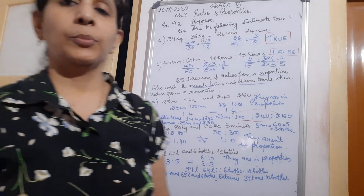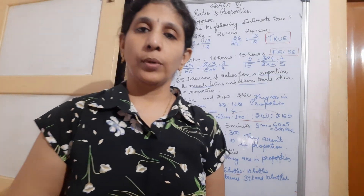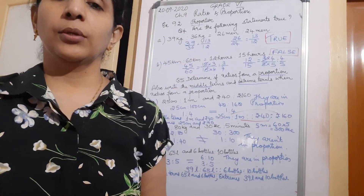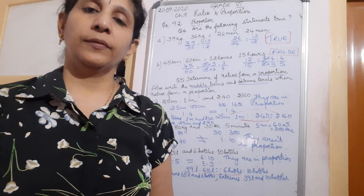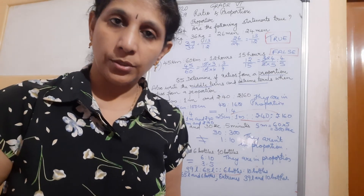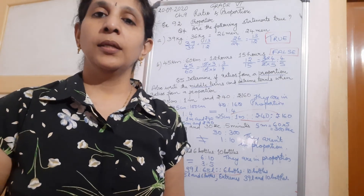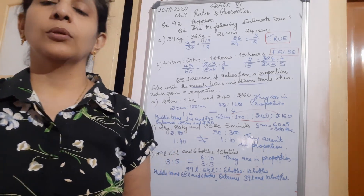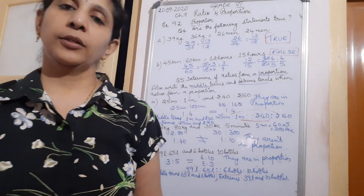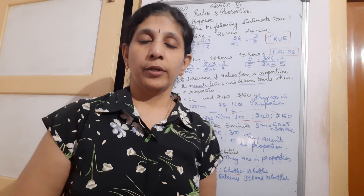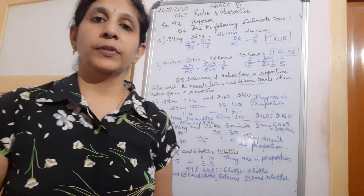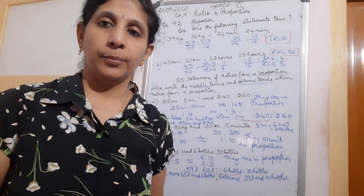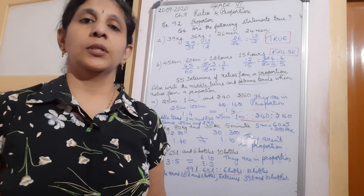What did you learn today? Proportions are equivalent ratios, and if two ratios are equal they are called a proportion. If two ratios are equal, you can apply the product rule: the product of extremes is equal to the product of means. Either way, you can find out whether a statement is true or false, or determine whether ratios are in proportion or not.